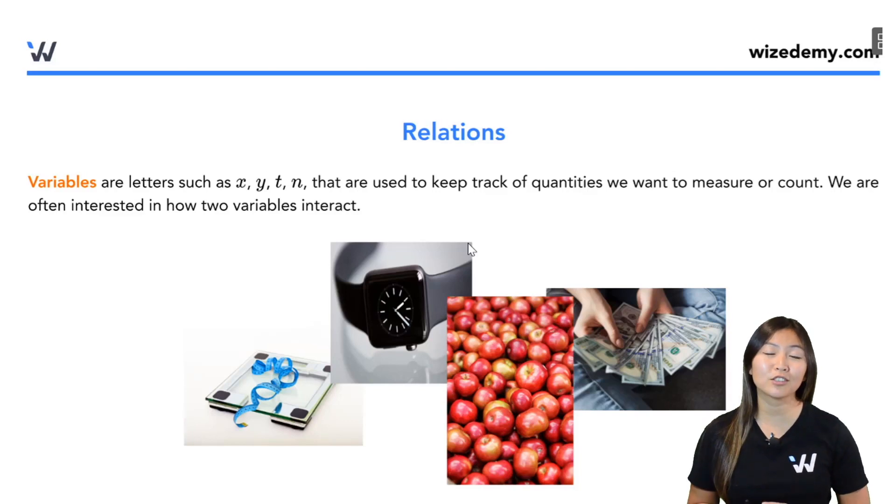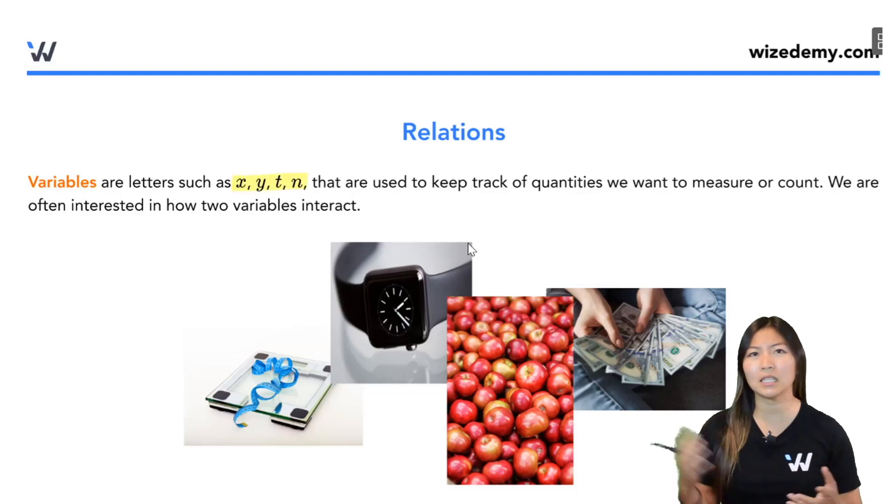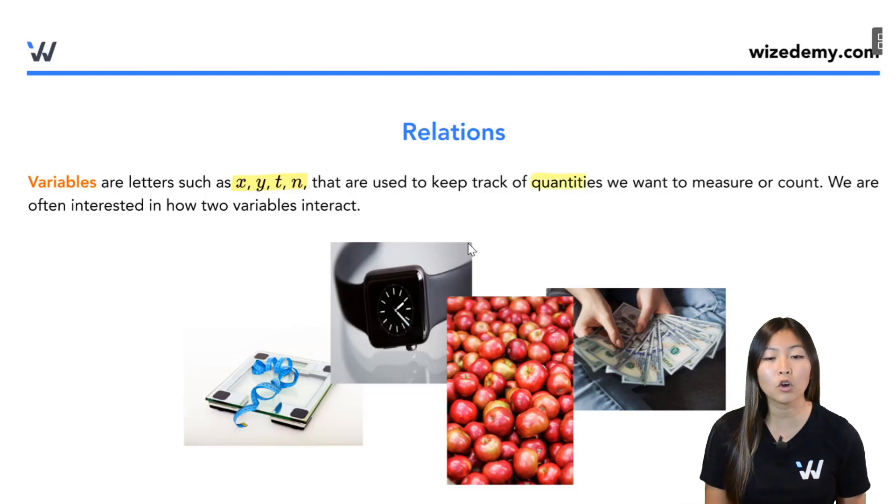Before we talk about a relation, we have to mention what variables are. So variables are these letters, x, y, z, a, b, c, t, n, any letter you want, that are used to keep track of quantities, meaning numbers. So quantities is just another word for numbers.